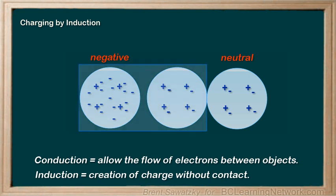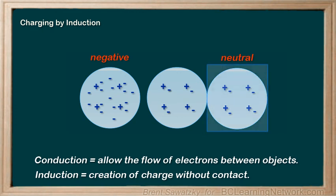The induction part was where we used the charged object to push the electrons over to the other side of the neutral object. There was no touching involved. The electrons never left the neutral object, but were just pushed over as far as they could due to the electrostatic forces. Now, in order to leave the items permanently charged, all we had to do was bring in the third object and charge by conduction — that is, we needed to create a path for those electrons to flow so they can stay in a separate object.